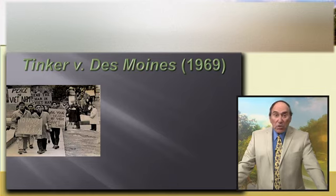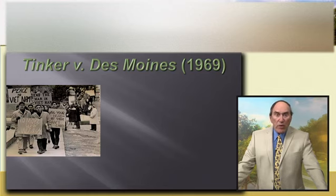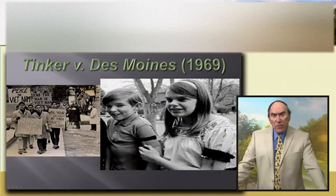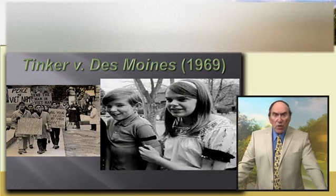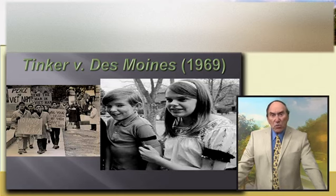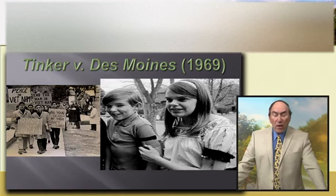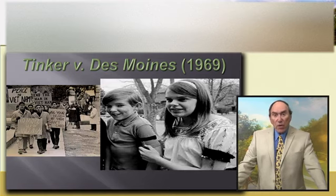but the principal found out and told the students they would be suspended if they wore the armbands. Despite the warning, John and Mary Beth Tinker, along with another student, wore the armbands and were suspended. The students' parents sued the school on the grounds that the school violated their children's free speech right.